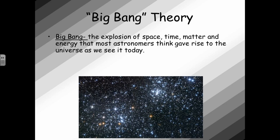The Big Bang Theory is basically the theory of how our solar system came to be. It is the expansion of space, time, matter, and energy that most astronomers think gave rise to the universe as we see it today. In the picture below, you'll see a lot of black matter and then a lot of stars. Well, each one of those lights is not just one star. It's actually billions of stars, which are called galaxies.